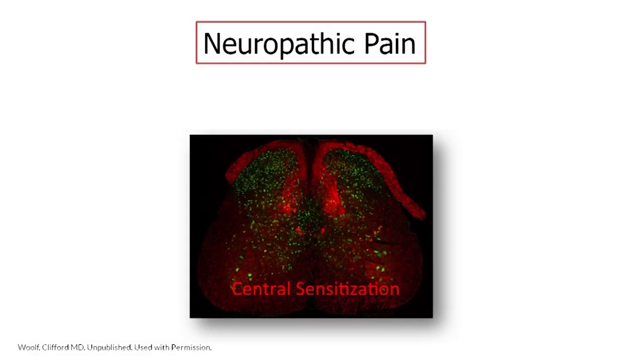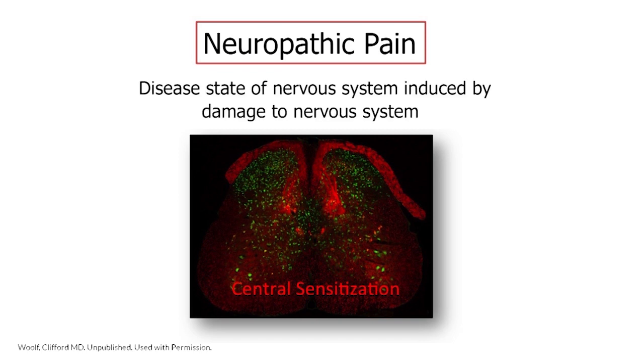I'm going to spend most of my time talking about neuropathic pain, and I will try to convince you that this represents a diseased state of the nervous system induced by damage to the nervous system. We have tended to think of pain only as a symptom — the expression of some other disease. What has happened recently is that as we understand the mechanisms that produce pain, in the case of neuropathic pain the pain itself is the disease, caused by changes that occur in the nervous system. Understanding these mechanisms has important implications both for diagnosis and for choosing the best treatment.